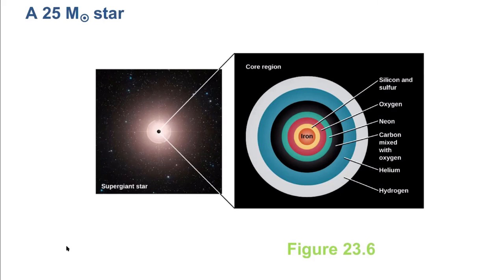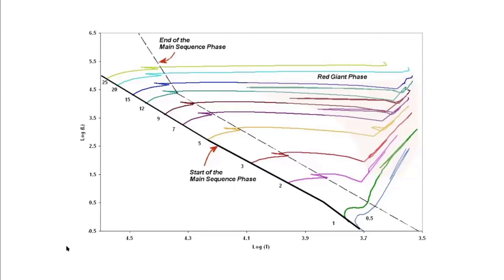What does this look like on the HR diagram? Here we have some post-main sequence evolutionary tracks for stars of different masses. The one solar mass star moves up the red giant branch, back to the horizontal branch, and then back up again. The higher mass stars follow different tracks — sort of like the pre-main sequence, low mass stars are mostly moving up and down while high mass stars are mostly moving left and right on the HR diagram. These high mass stars are basically not changing luminosity at all; they're just moving back and forth across the top of the HR diagram as they burn successively heavier elements in their core.